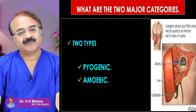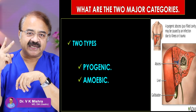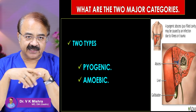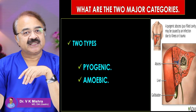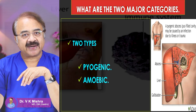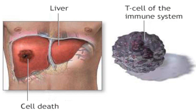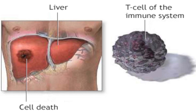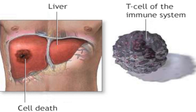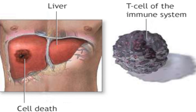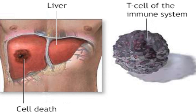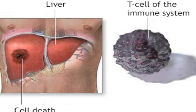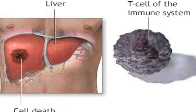First of all, you need to understand that liver abscess falls into two categories. Number one is the pyogenic liver abscess, and number two is the amoebic liver abscess. These are two different types with different categories.